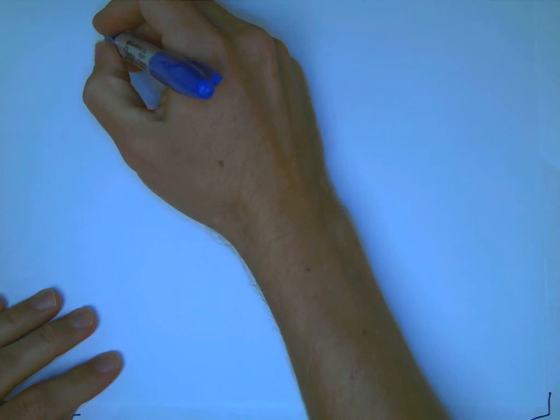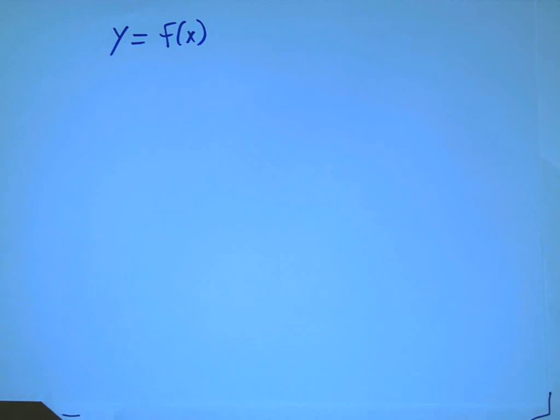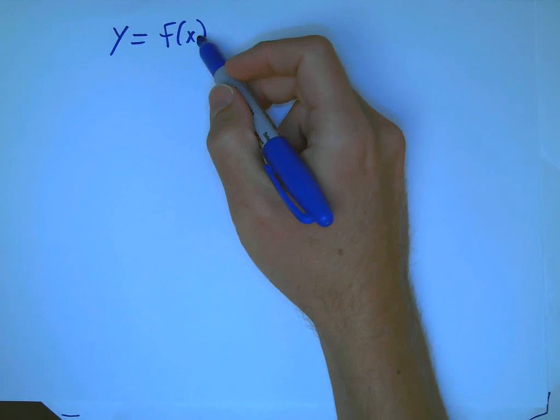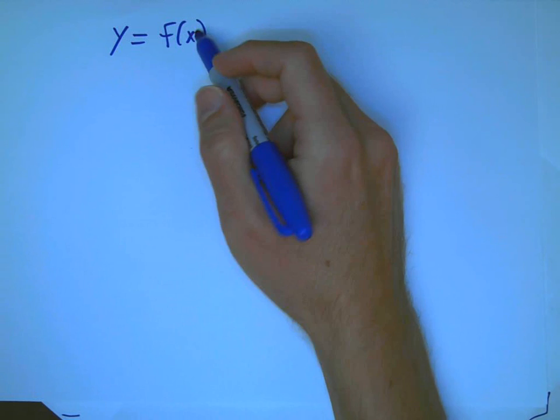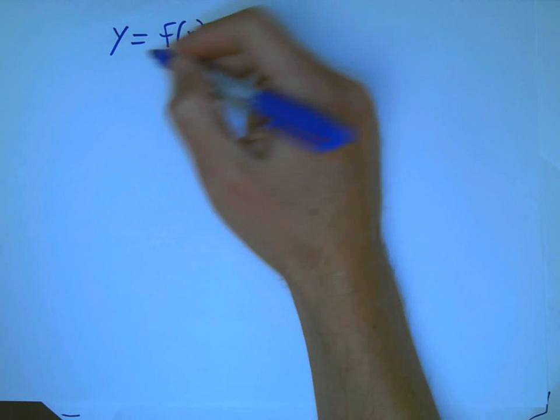Let's do a quick run-through, a review of inverse functions. If I have a function f, then it has an input. We often call that x, and the output we often call y.